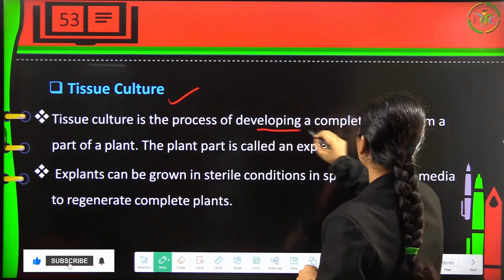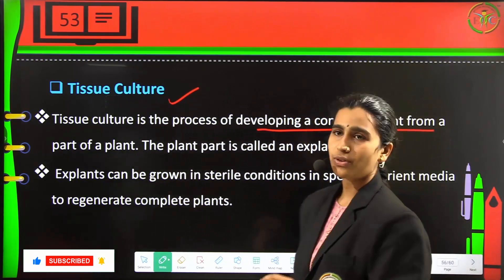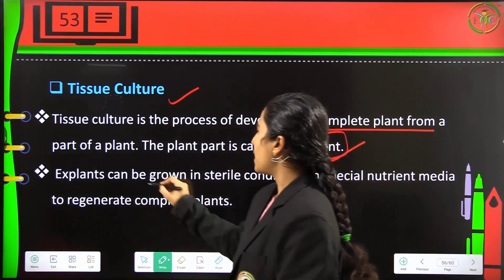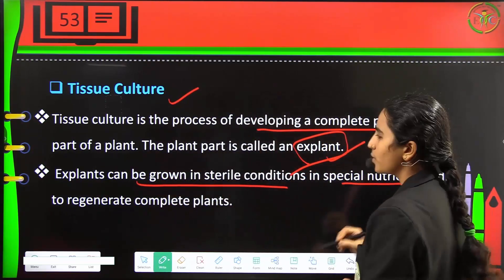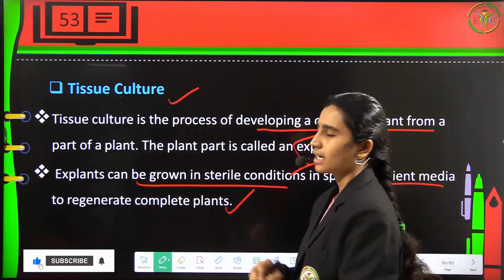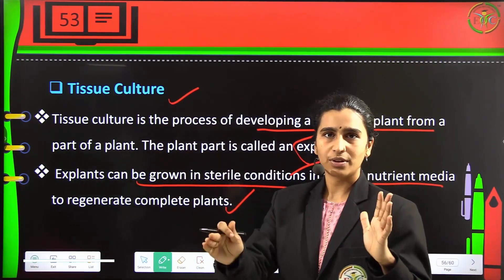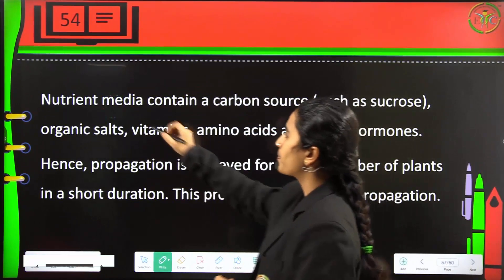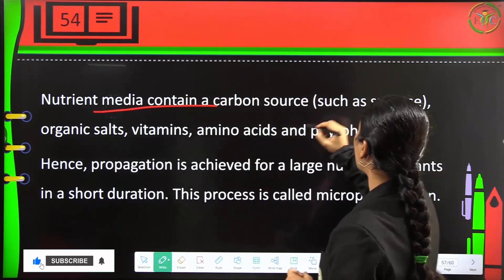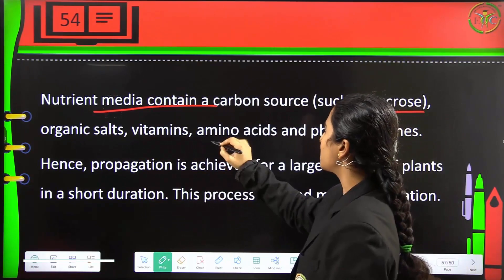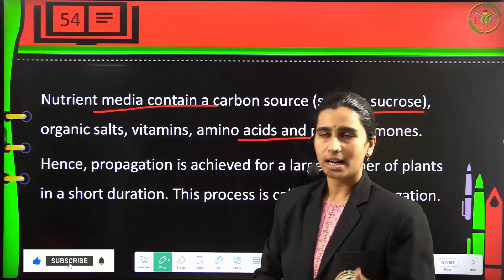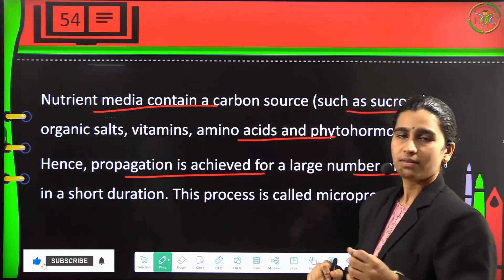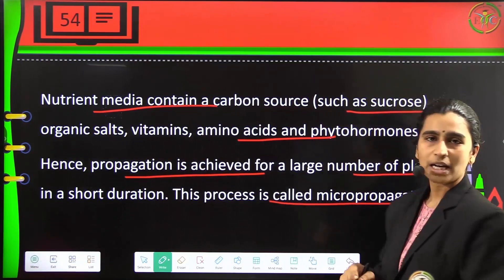Tissue culture is a process of developing a complete plant from a small part of a plant called the explant. Explants can be grown under sterile conditions in special nutrient media to regenerate a complete plant. The nutrient media consists of a carbon source like sucrose, organic salts, vitamins, amino acids, and phytohormones. Propagation of a large number of plants within a short time is achieved through this process, called micropropagation.